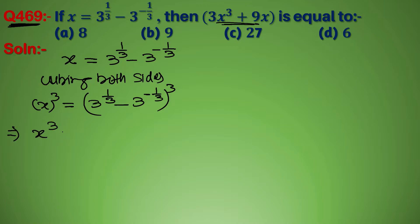x cube equal to - इसमें a minus b whole cube की identity use करेंगे. यह होता है a³ minus b³ minus 3ab into a minus b. इस identity को use करेंगे हम.